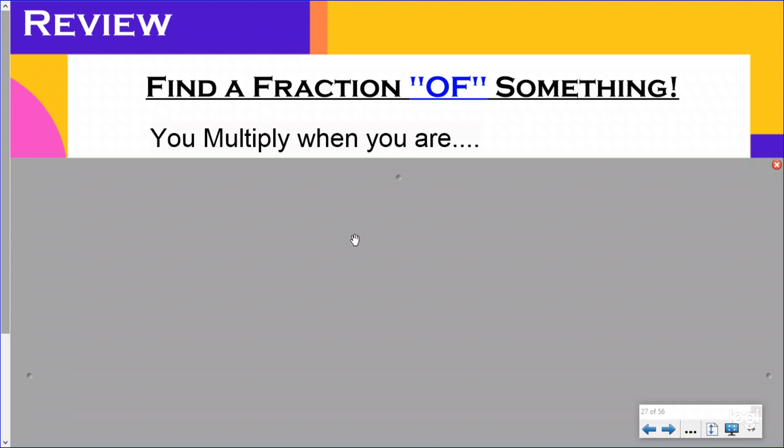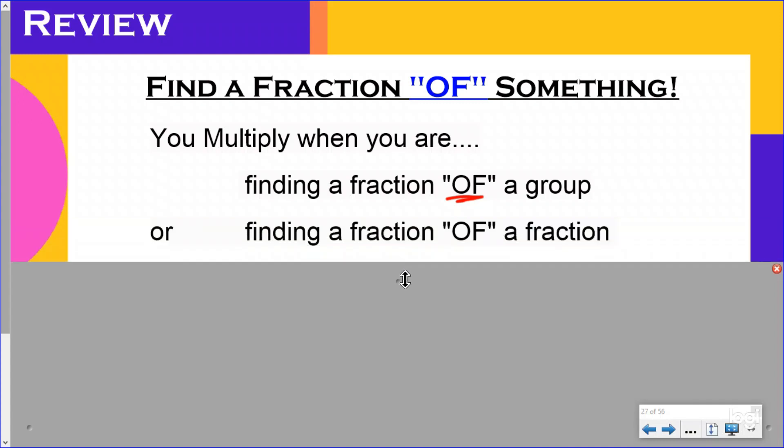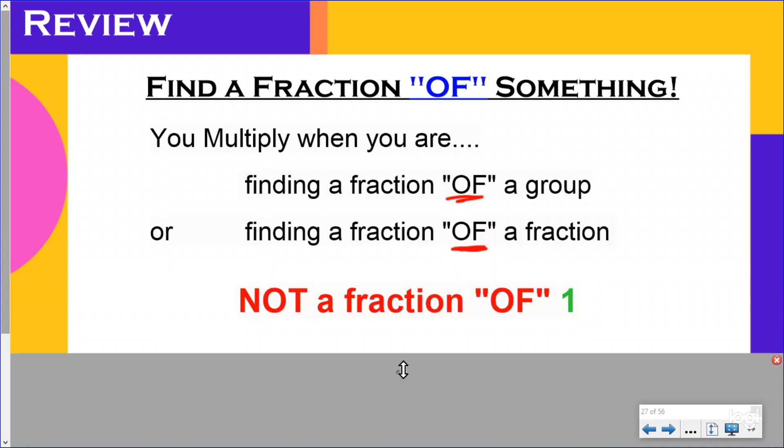To review our video number two, you multiply when you are finding a fraction of a group or a set. You also today are going to be multiplying when you are finding a fraction of another fraction. So the word of is very important for both of those. But just like video two said, you are not multiplying if you are finding a fraction of one, because one is not a group or a set, and it is also not a fraction.